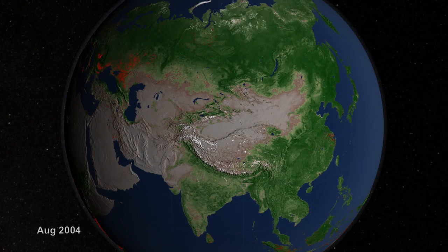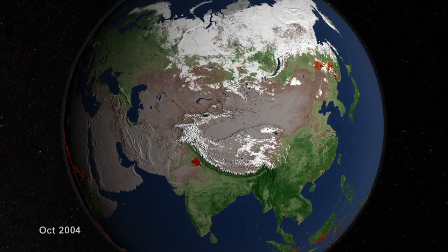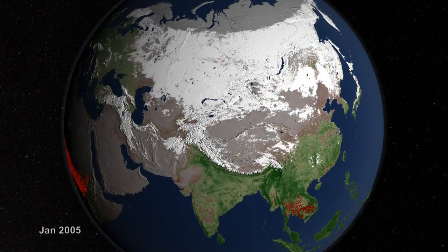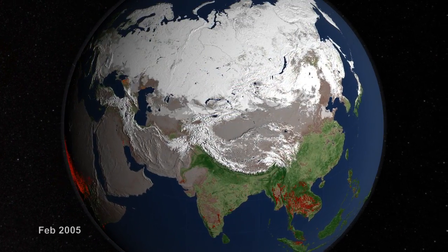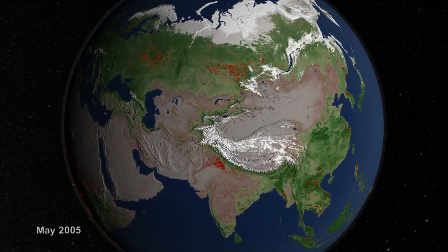Agricultural fires dominate Asia and Southeast Asia. Crop cultivation fires in China, Thailand, and the Punjab region of India can be seen here.